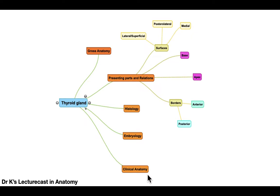The thyroid gland is considered to be a very important endocrine gland in the human body, next to the pituitary gland. Its secretions — thyroid hormones T3, T4, and TSH — have so much influence on many activities in our body. Mainly, the thyroid gland controls the basal metabolic rate, including fat, carbohydrate, protein, and mineral metabolism — especially calcium — all of which depend on thyroid secretion.